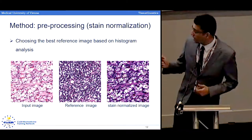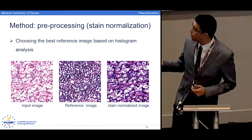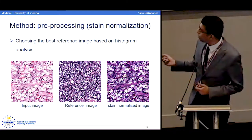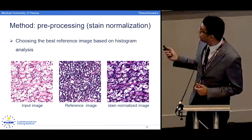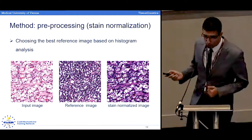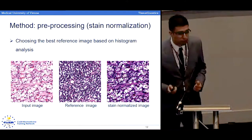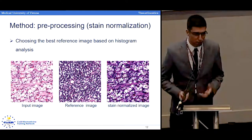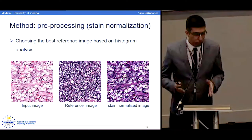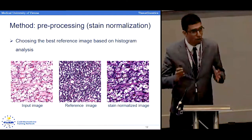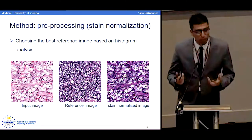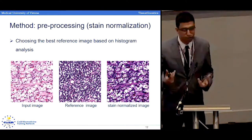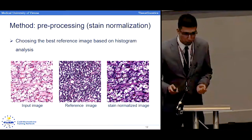Here we can see an example: we have the input image and the reference image, and after applying stain normalization we get the stain normalized image which has the color scheme of the reference image. One problem we had was how to choose the best reference image. To do that, we plot the histogram of the nuclei and the background, and then chose the image with the most distinction between the nuclei distribution and background distribution as the reference image.